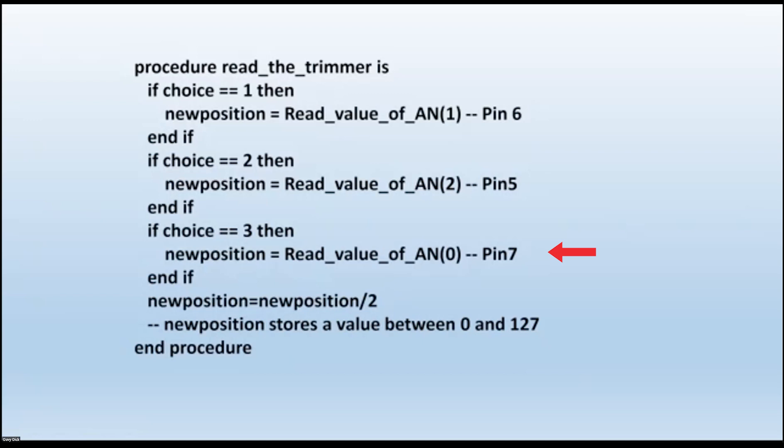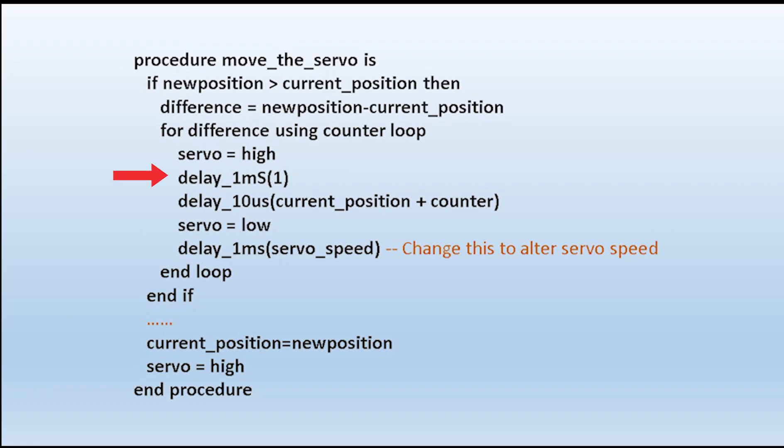We're going to get a value back that'll vary between nothing and 255, which is too much for the pulse width. So we divide it by 2. So we're now getting somewhere between 1 and 127. If I made that 1 millisecond, as you saw there, it's going to be between 0 and 127, which means we can have the full swing of the servo.